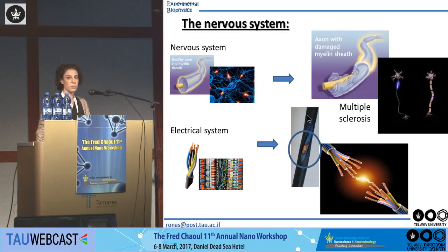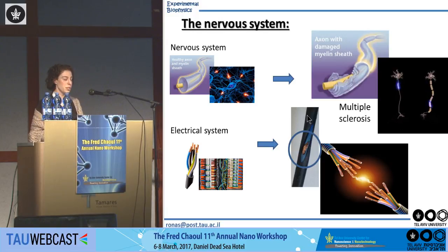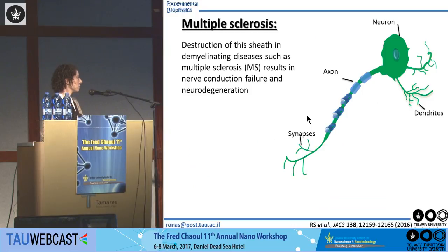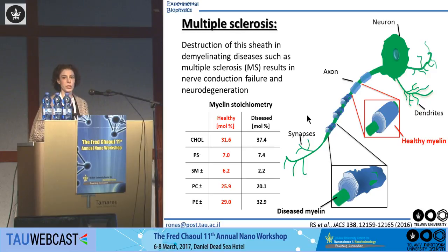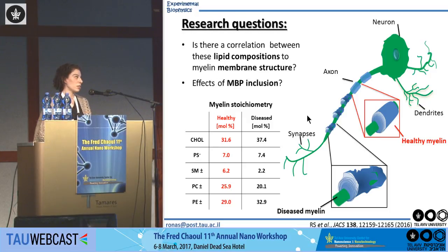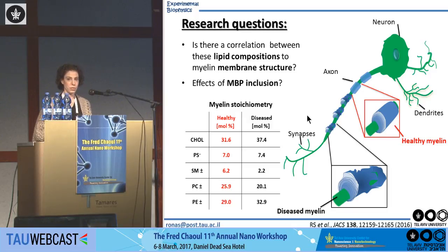Destruction of these insulator layers results in electrical shortcuts. In our nervous system, the damage results in signal transmission malfunction with diverse symptoms determined by the function of the affected neuron. In neurological diseases like multiple sclerosis, these insulator layers are destroyed. From in vivo experiments, we know that the lipid stoichiometry in the healthy composition and the diseased composition are different.